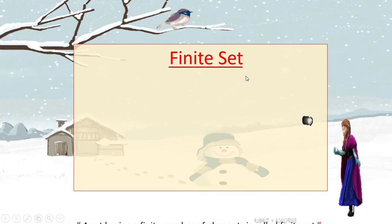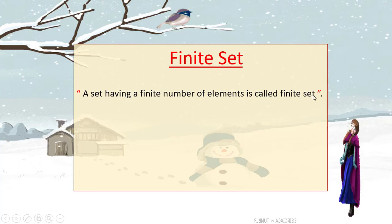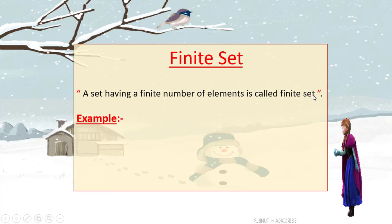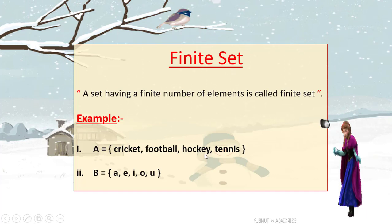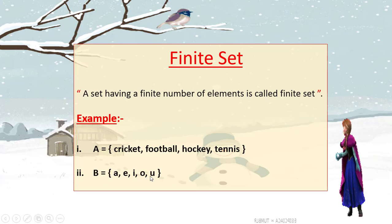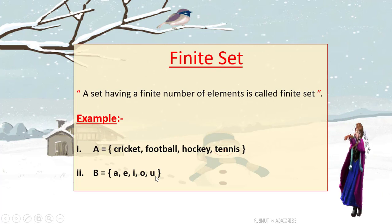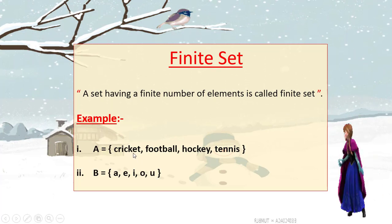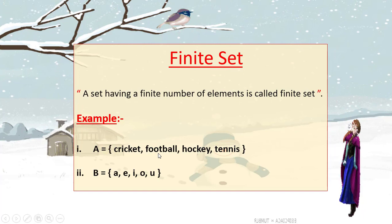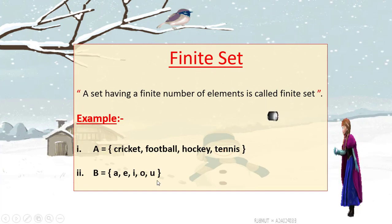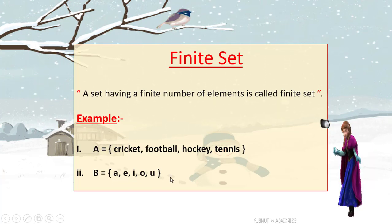Finite set: a set having a finite number of elements is called a finite set. For example, A is the set of four games, and B is the set of vowels. You can easily count the elements of these sets — A has four elements and B has five elements. Since both sets have a countable, finite number of elements, they are finite sets.